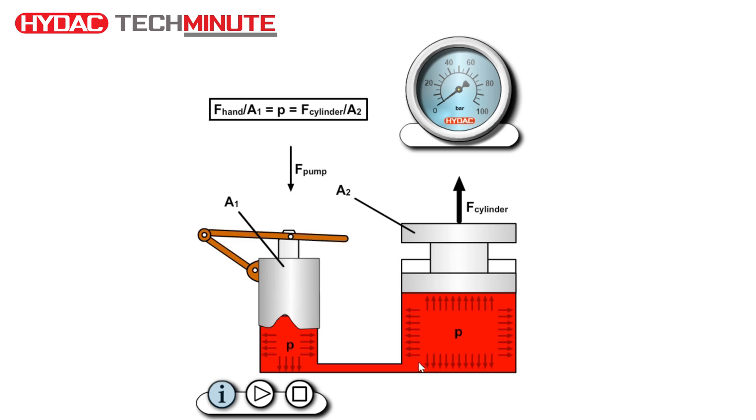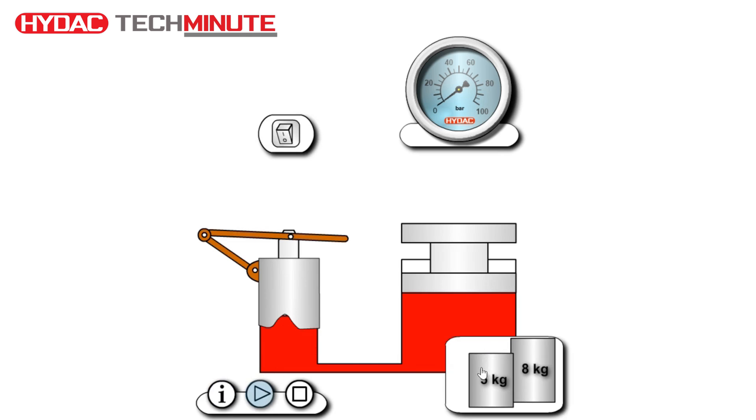The pressure that the fluid has is then applied to a larger piston on the right-hand side, and what this does is amplify the force output. If we have a load on our cylinder here on the right-hand side and we operate the jack.